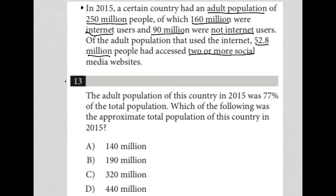Here's question 13. The adult population of this country in 2015 was 77% of the total population. That strikes me as a sentence we can translate, so I'm going to use the translate word problem strategy here. This first sentence can be rewritten as 250 million.